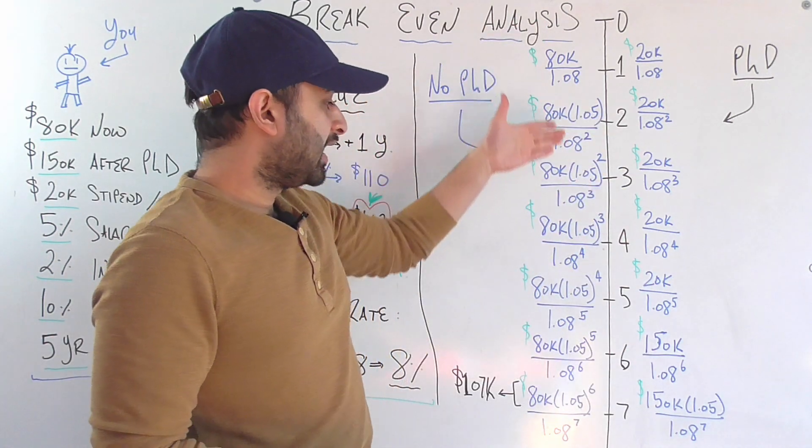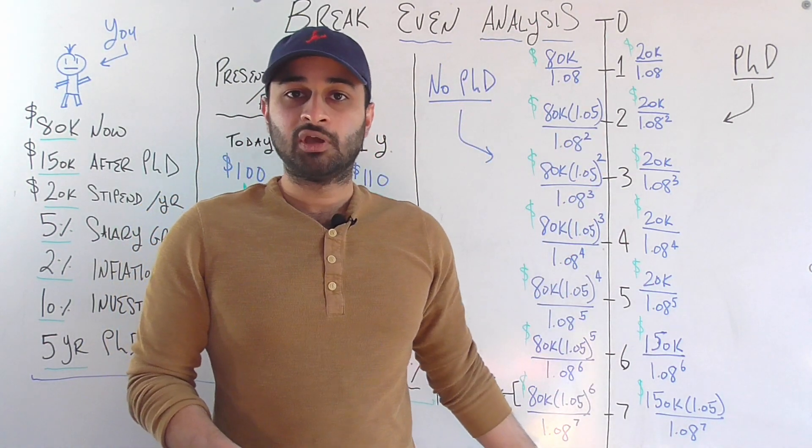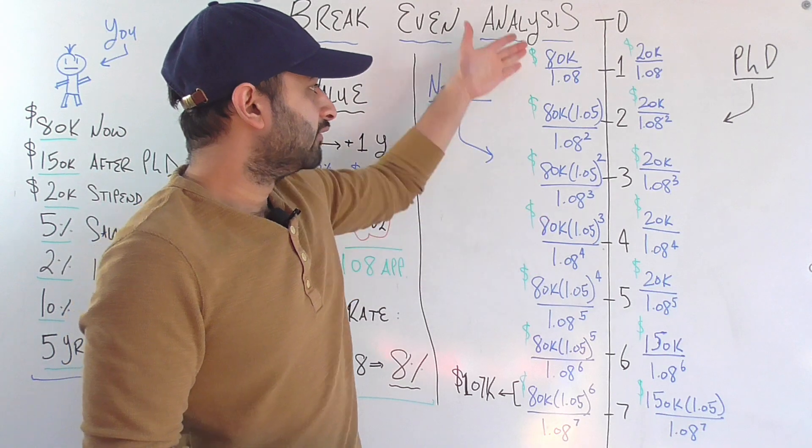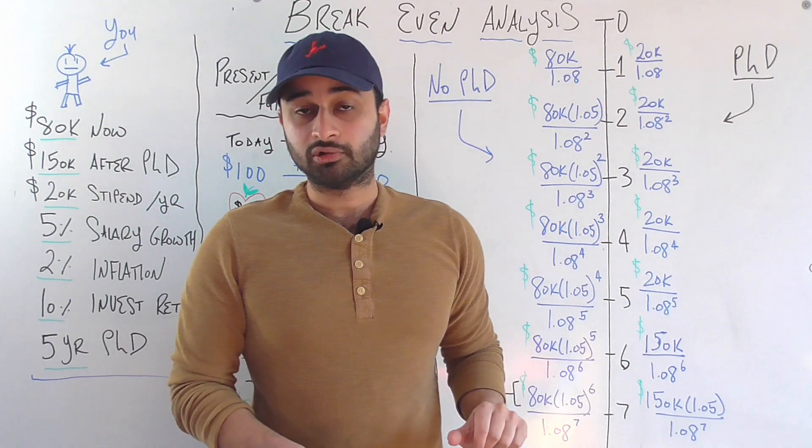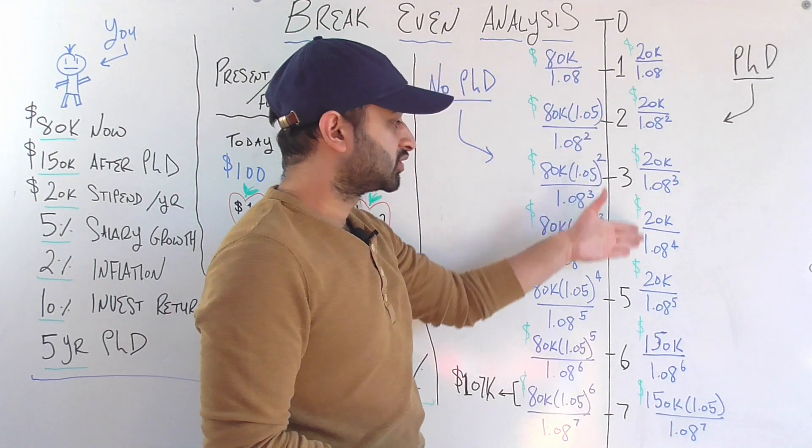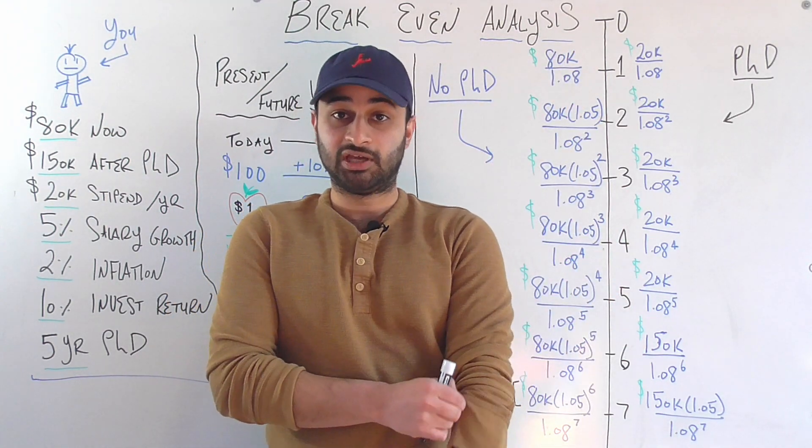And the very simple question we need to ask is how many years out would we need to go? So how far ahead do we need to draw this timeline such that the present value of this income stream related to not getting a PhD is equal to the present value of this income stream, which is related to getting a PhD.